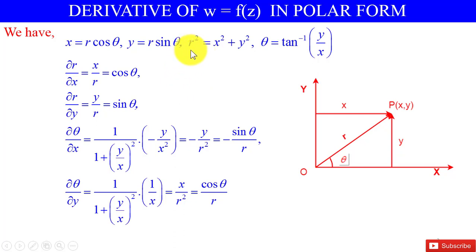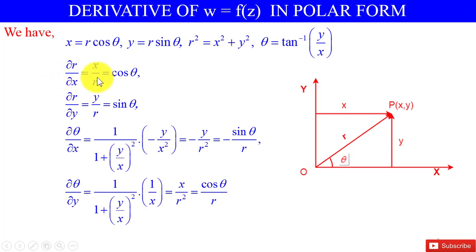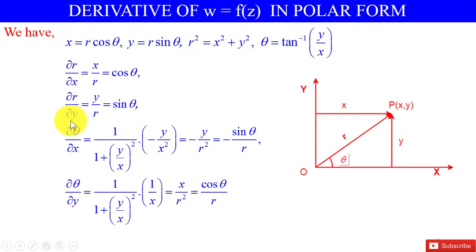If we differentiate r² = x² + y² partially with respect to x, we have ∂r/∂x = x/r = cosθ. Similarly, differentiating r² = x² + y² partially with respect to y, we have ∂r/∂y = y/r = sinθ.